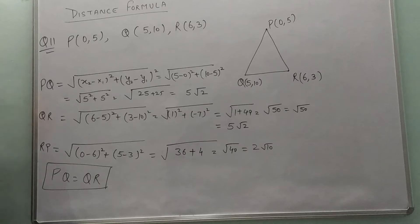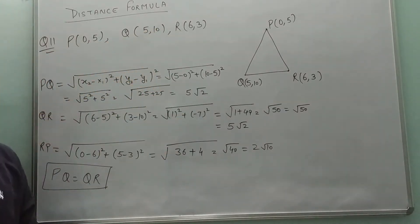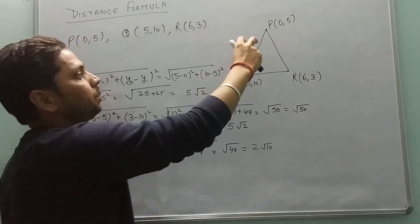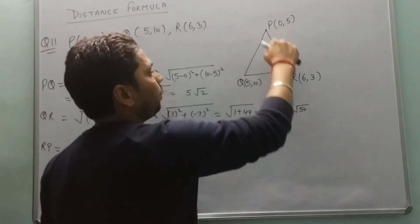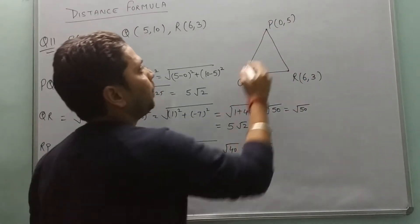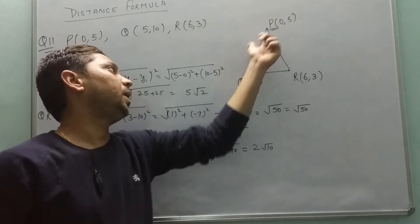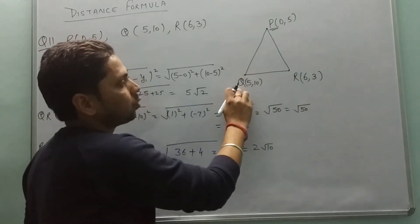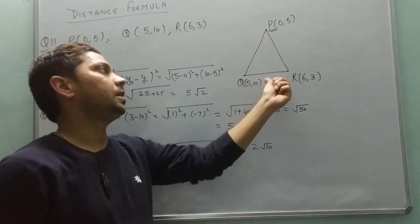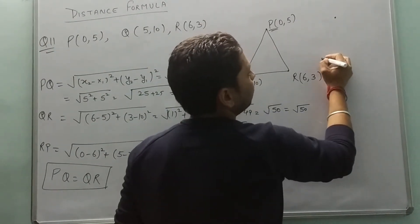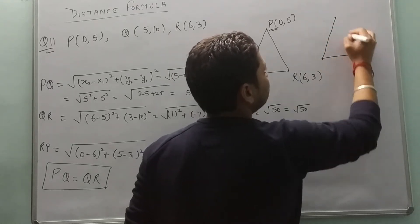Question number 11: points P, Q, R are the vertices of a triangle. A vertex is a point where two lines meet — PQ and PR meet at point P, so P is the first vertex. Similarly, PQ and QR meet at Q, so Q is the second vertex. On joining these three vertices, we form a triangle.